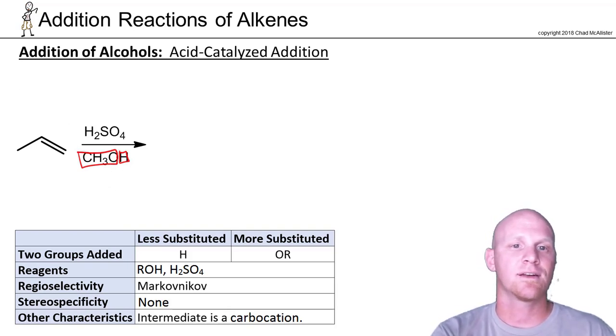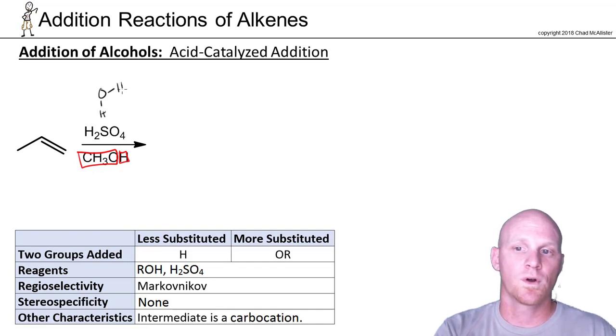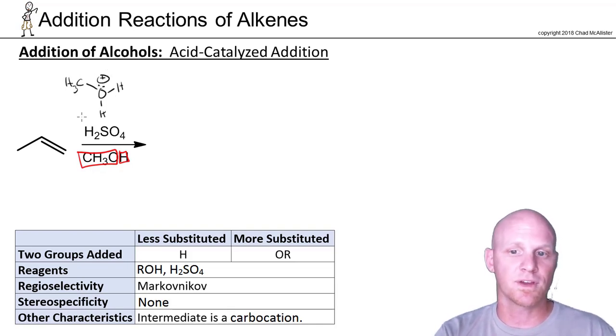This is also acid catalyzed and the mechanism is exactly analogous to what we saw with acid catalyzed hydration. So in this case we're going to have instead of hydronium, instead of protonated water, we're going to have protonated alcohol. That we'll start with. H2SO4 will dissociate completely in our alcohol.